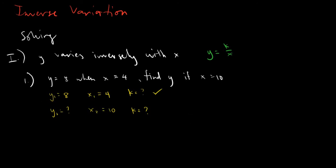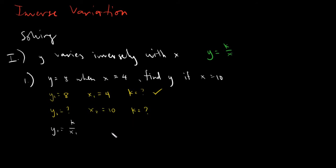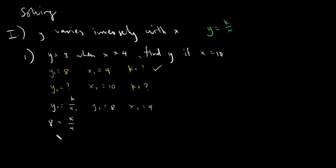So now the first thing you do is solve for k. This would be y sub 1 equals k over x sub 1. Let's substitute: y sub 1 is 8 and x sub 1 is 4. So we have 8 equals k over 4. Transposing the 4 to the other side, that would be 8 times 4, giving us k equals 32.